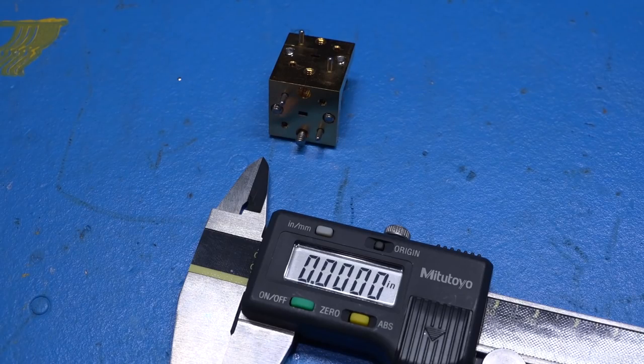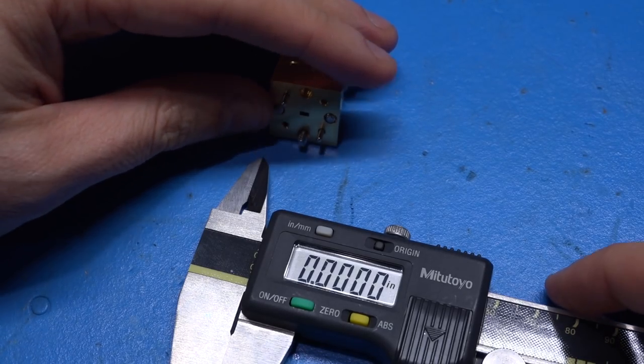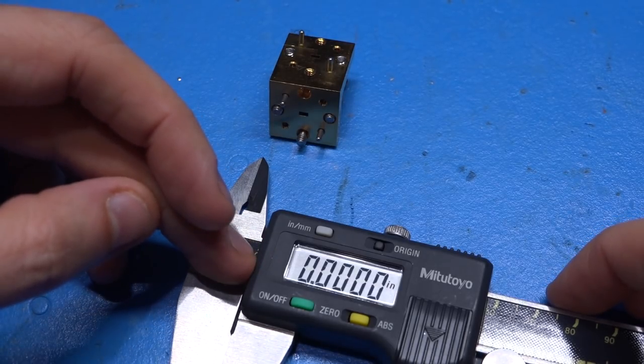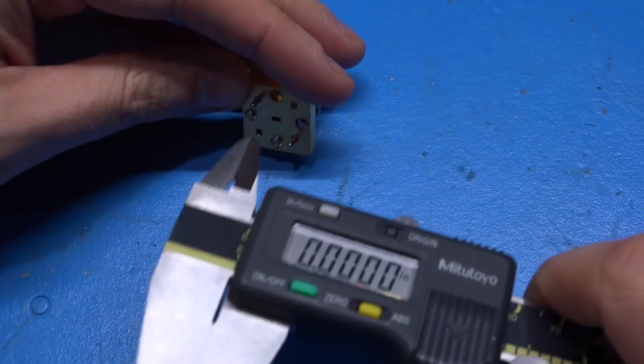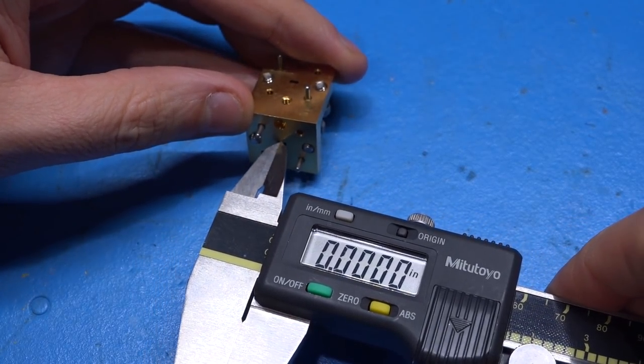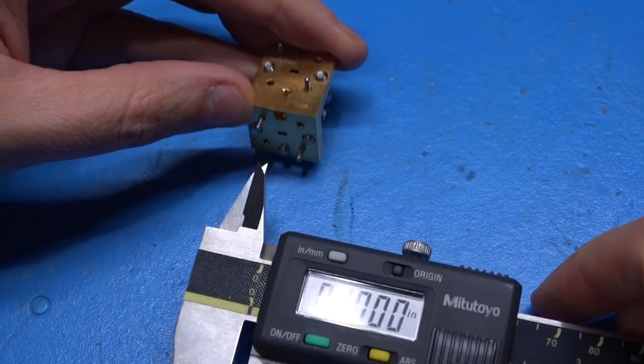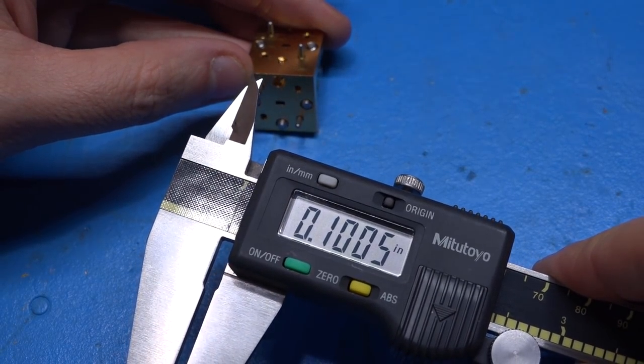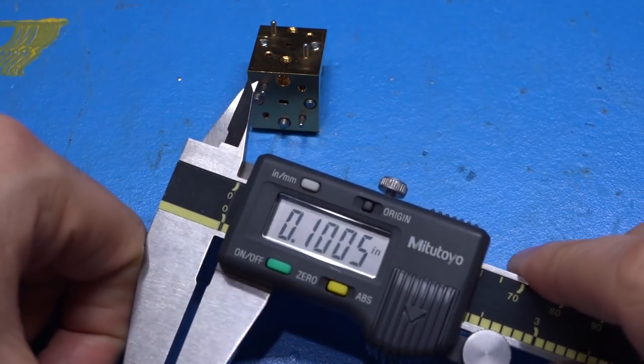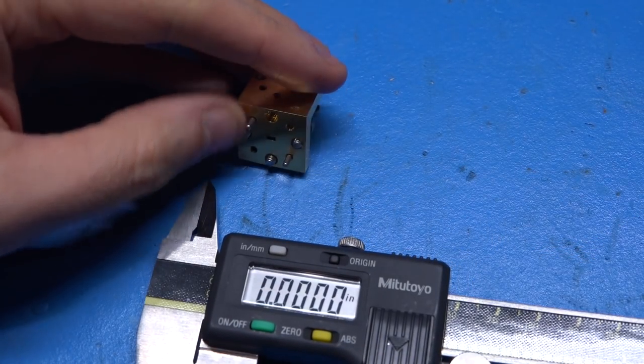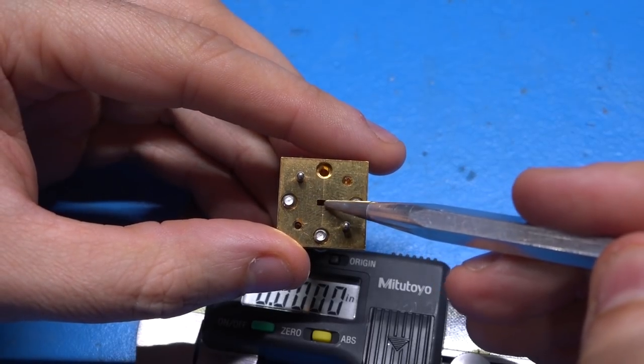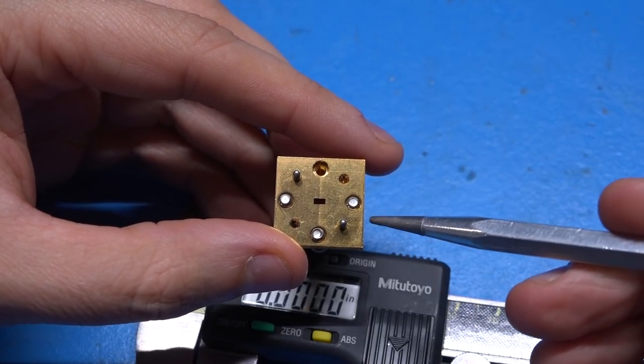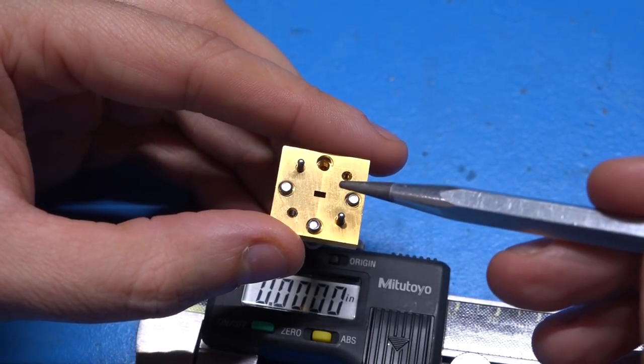So let's verify that this is indeed a WR10 waveguide interface. And the way to do this is that you have to measure in inches, and everything after the decimal point represents the WR number, the waveguide number. So let's see what we have here. Check it out. Indeed, WR10. And this is a standard. That's how the naming convention goes. And of course, with waveguide, you can calculate exactly the cutoff frequency of the waveguide by its rectangular dimensions. It's a very simple mathematical relationship based on EM theory.